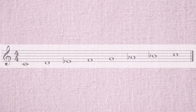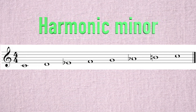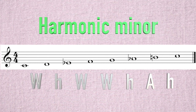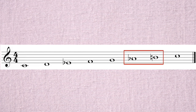Composers made an edit to the scale to improve the harmony: they raised the seventh step of the scale from the subtonic B-flat to the leading tone B-natural, and they started calling that the harmonic minor scale. The new interval pattern for the harmonic minor scale is: whole, half, whole, whole, half, augmented second, half step.